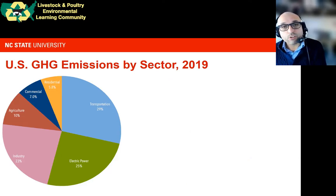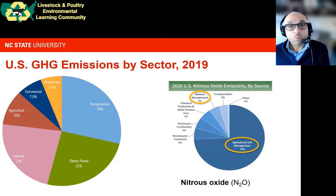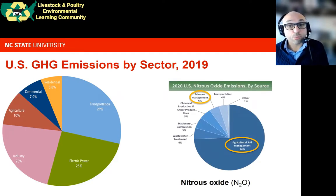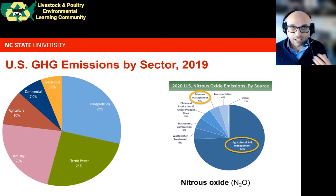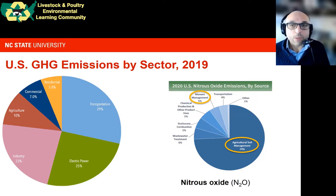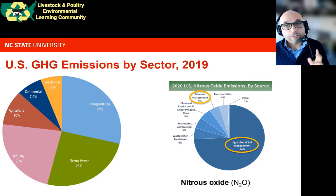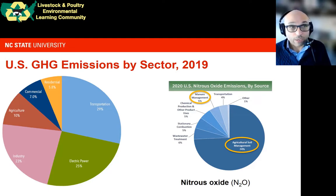Shifting focus to nitrous oxide, we see an even more pronounced role for agriculture. About 74% of nitrous oxide emissions — which is 265 times as potent as carbon dioxide — come primarily from agricultural soil management, with an additional 5% coming directly from manure management.